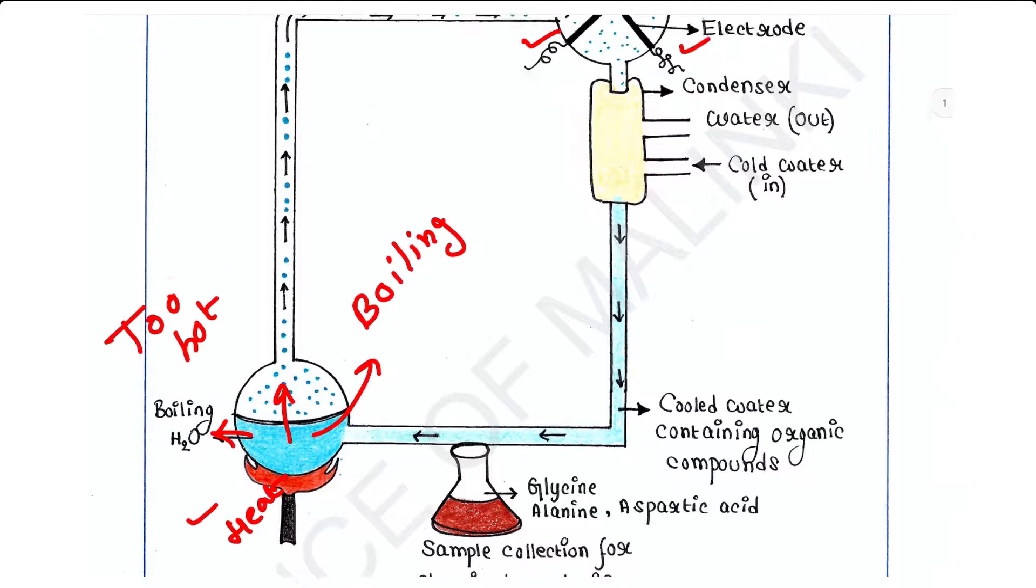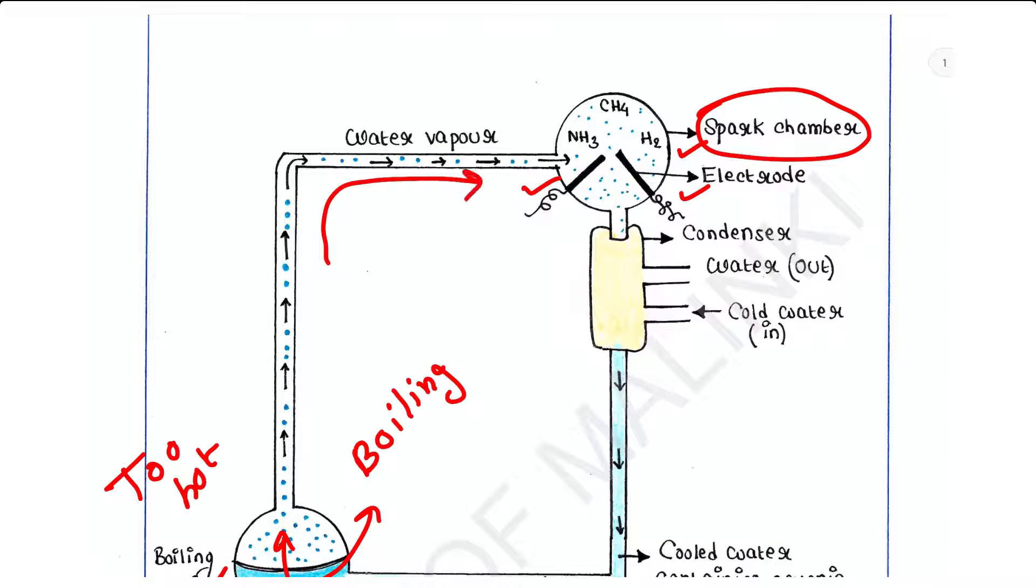Now in this spark chamber, they used a mixture of methane, ammonia, and hydrogen gases in 2:1:2 ratio. This ratio is important, try to remember this ratio. So 2 is for methane, 1 is for ammonia, and 2 is for hydrogen. And they created electric discharge—that is like primitive lightning—via these two electrodes, and the total temperature was maintained at 800 degrees Celsius.